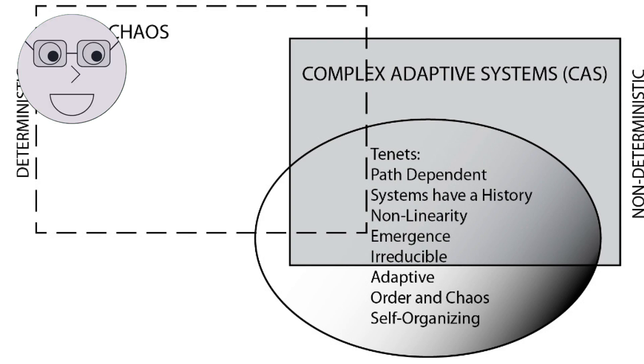Chaos theory has also been applied to the study of human behavior. One of the key insights of chaos theory is that seemingly random behavior can actually be the result of underlying patterns and structures. This has led to the development of new approaches to understanding human behavior, such as complexity theory and network science.